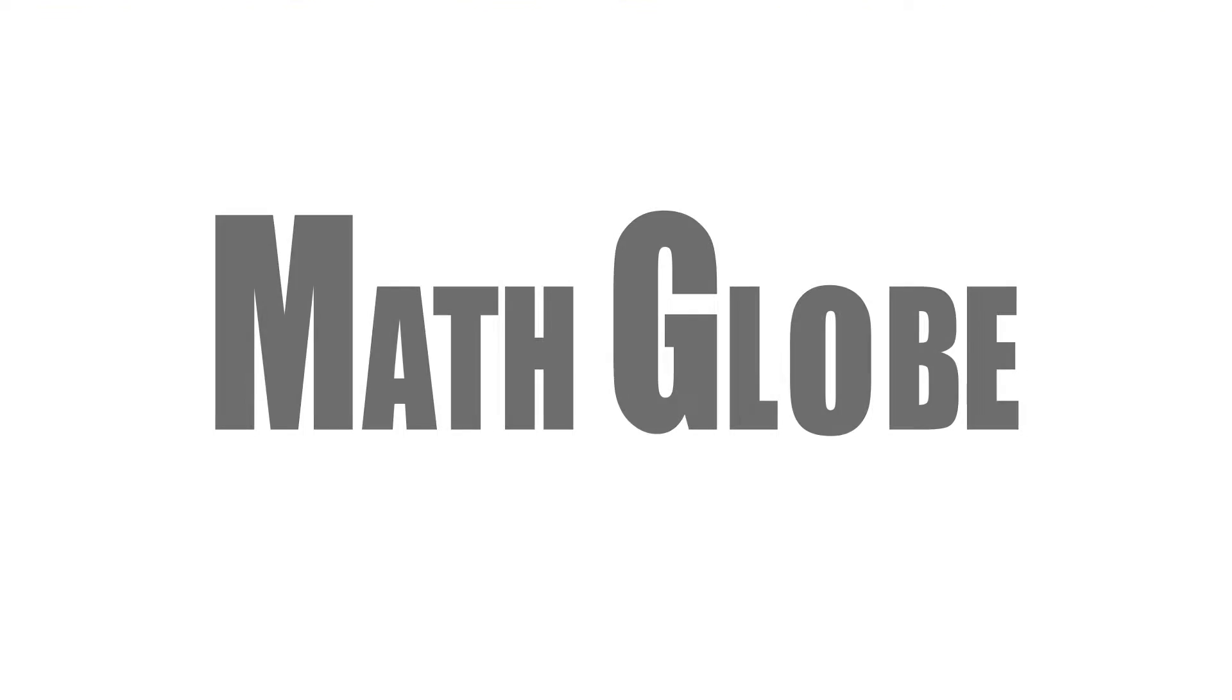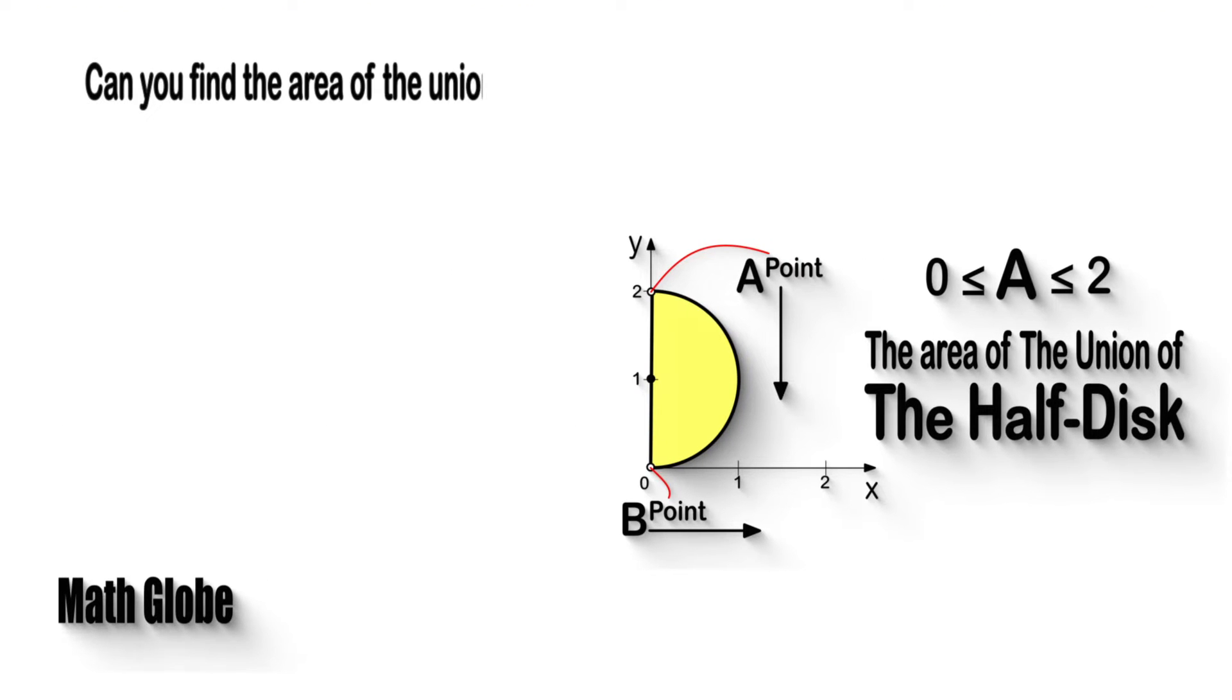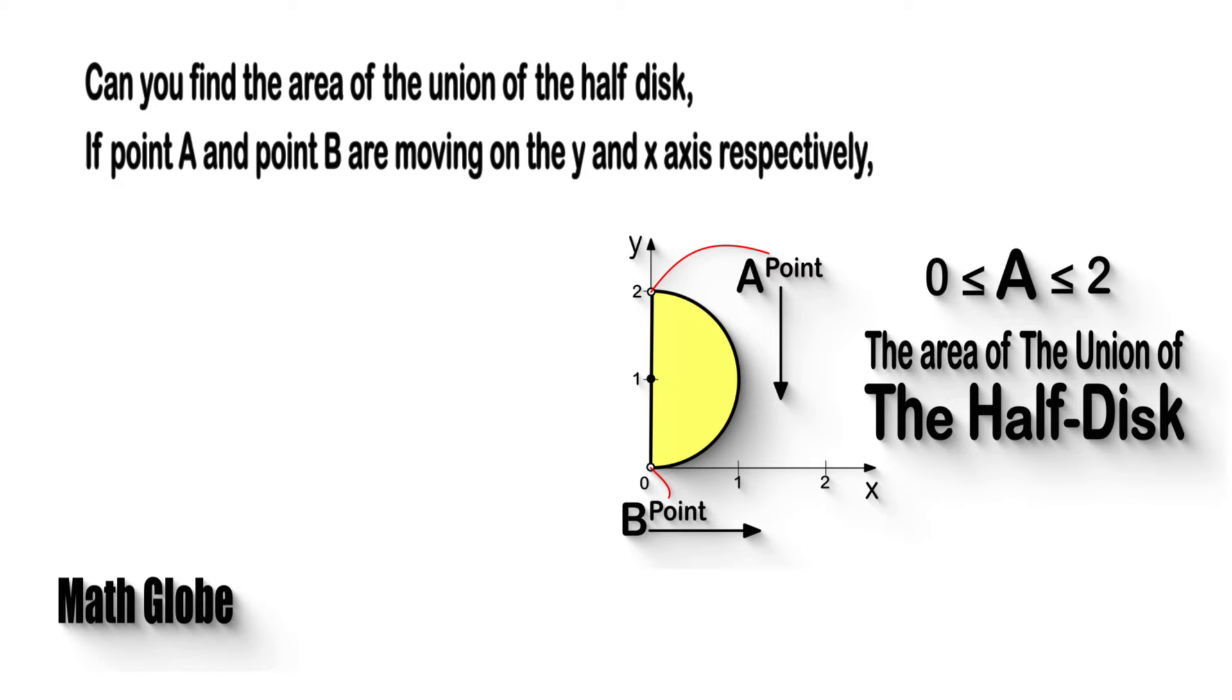Hi, this is MathGlobe. Can you find the area of the union of the half disk if point A and point B are moving on the y and x axis respectively, and point A has a value between 0 to 2?